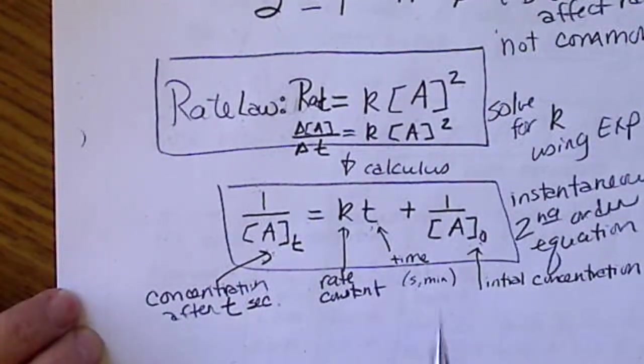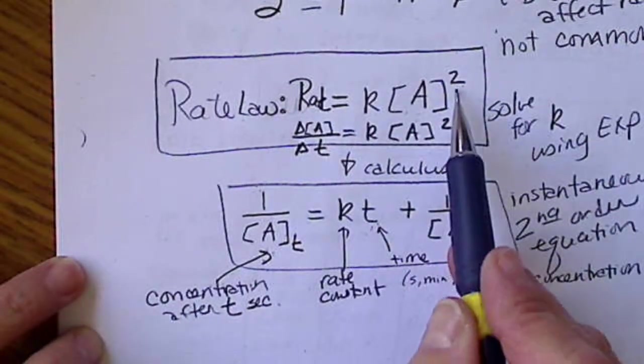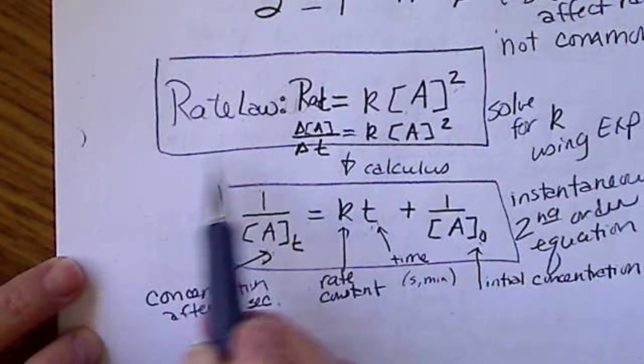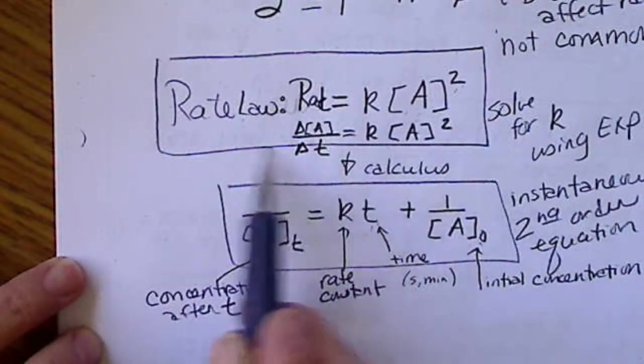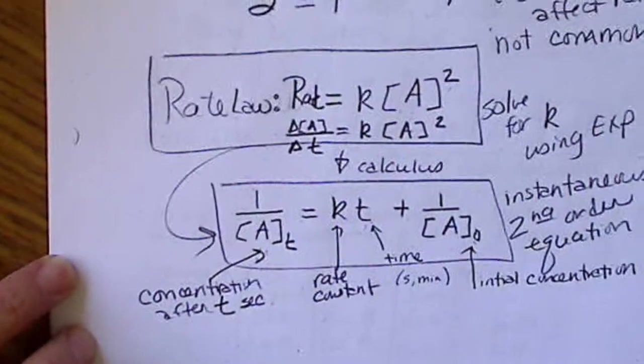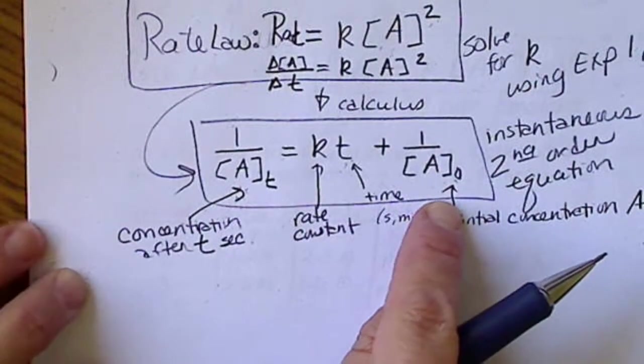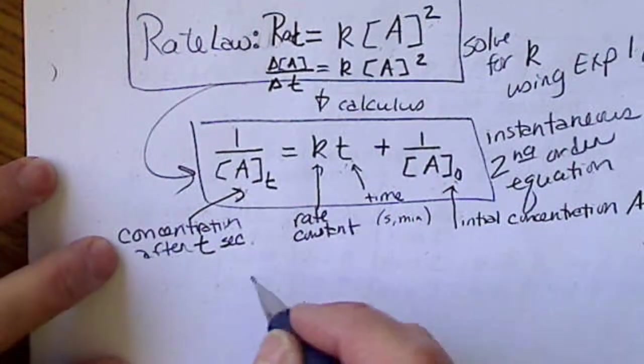So, a second order rate law will always have one variable to the second power. Then this equation turns into this equation, which you have to be able to do calculus to believe it or to derive it for yourself.